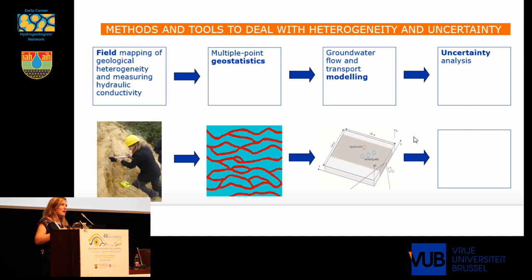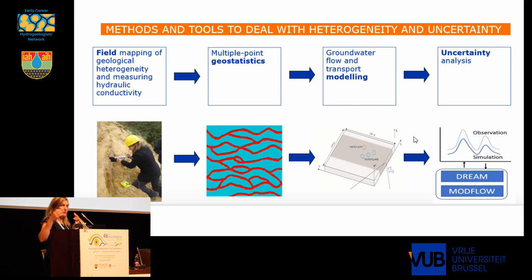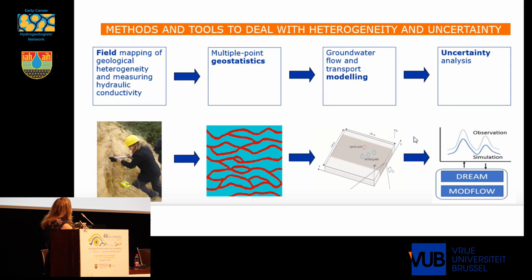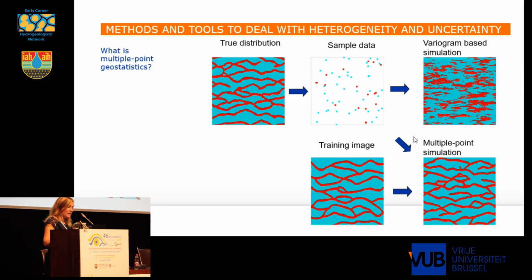I will only focus on the ones I know best and the ones we apply in my research group. What we typically do is a combination of the following things: we do a lot of field work to map geological heterogeneity, to measure hydraulic conductivity, to do geophysical campaigns, and so on. Then we typically use multiple-point geostatistics to generate realistic patterns of geological heterogeneity, which we can use in our groundwater flow and transport models. We also perform uncertainty analysis to see how the uncertainty we always have on the patterns of geological heterogeneity results in uncertainty on our model outputs.